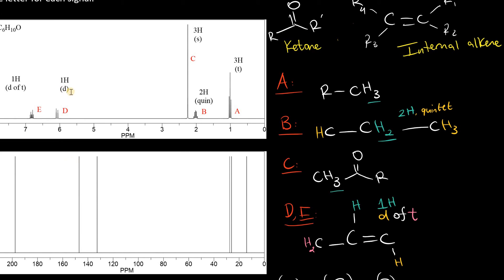Now signal D is a 1H doublet, so if we call this the doublet of triplet, this must be the doublet, and it only has one neighbor towards the left here, this adjacent proton in turquoise.